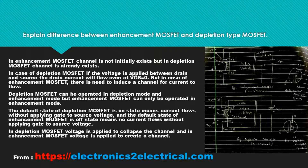But in the case of enhancement MOSFET, there is a need to induce a channel for current to flow. Depletion MOSFET can be operated in both depletion mode and enhancement mode, but enhancement MOSFET can only be operated in enhancement mode.